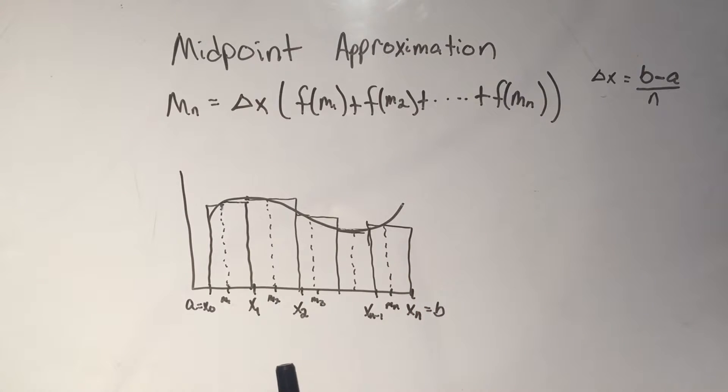plus, plus, up to f of mn. And I drew a picture here to show you kind of what that looks like. So you remember, a is your first endpoint, and you call that x naught,